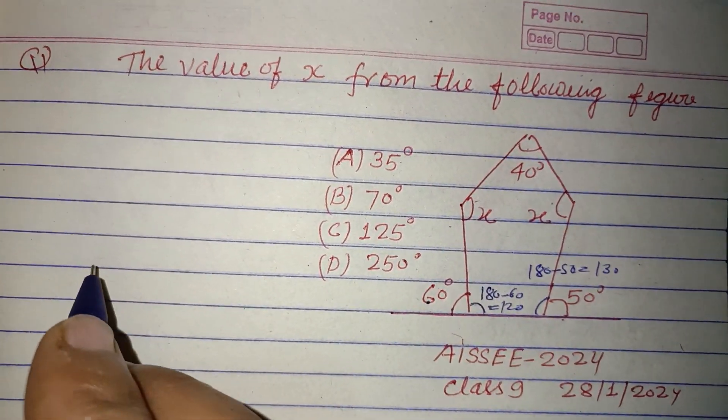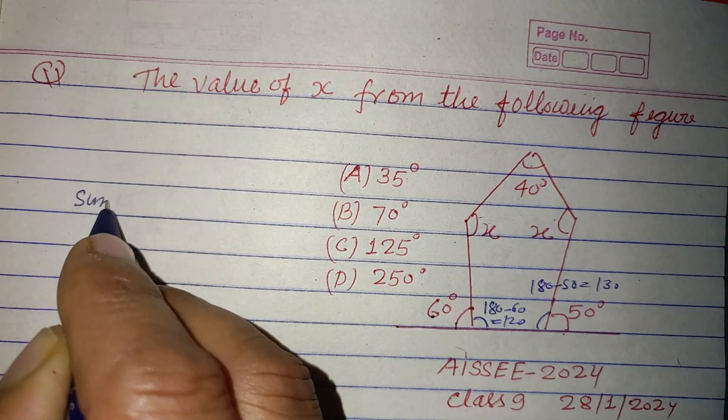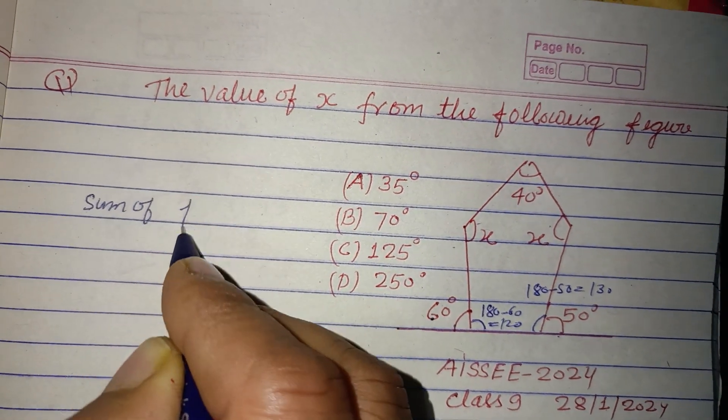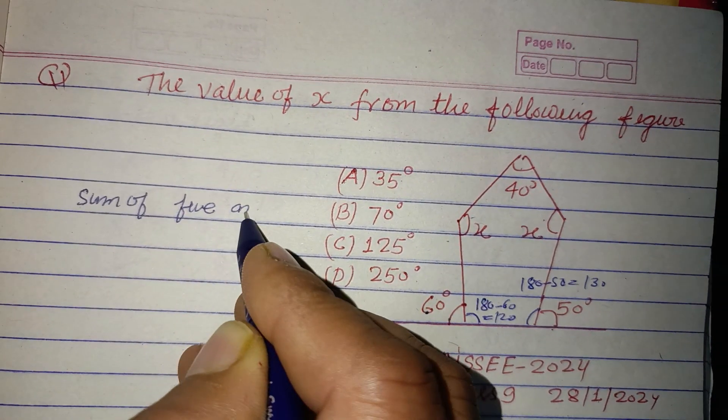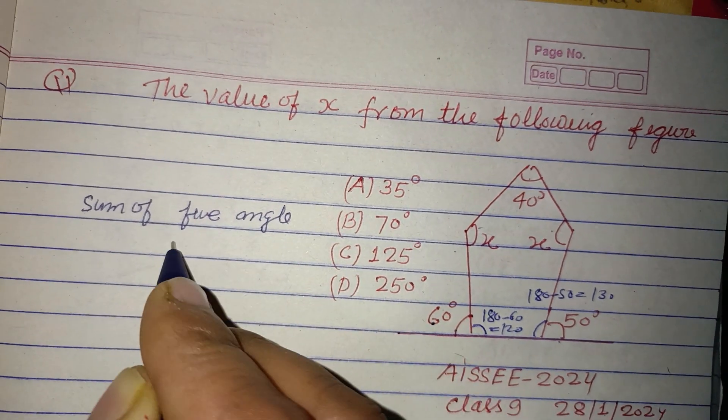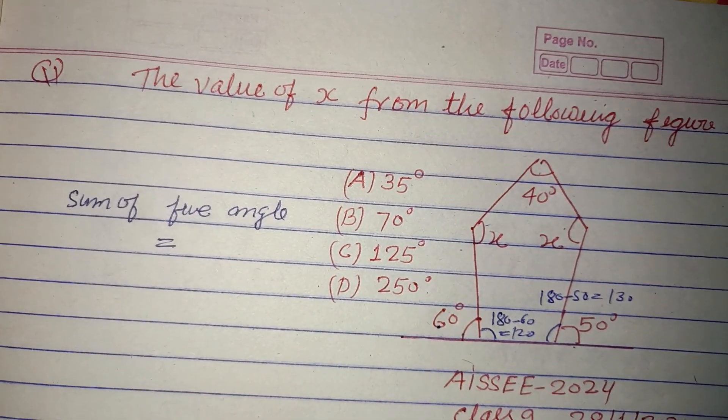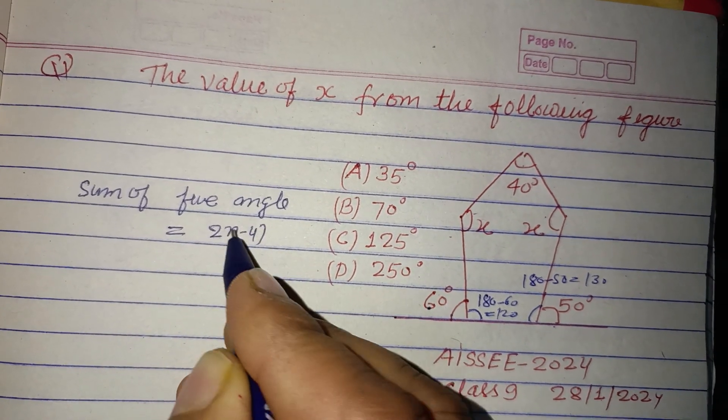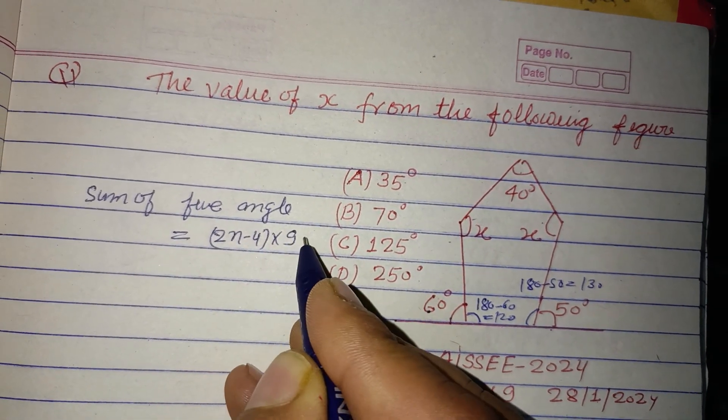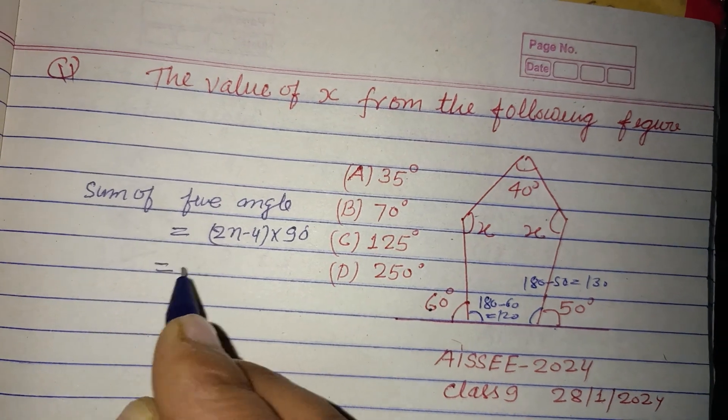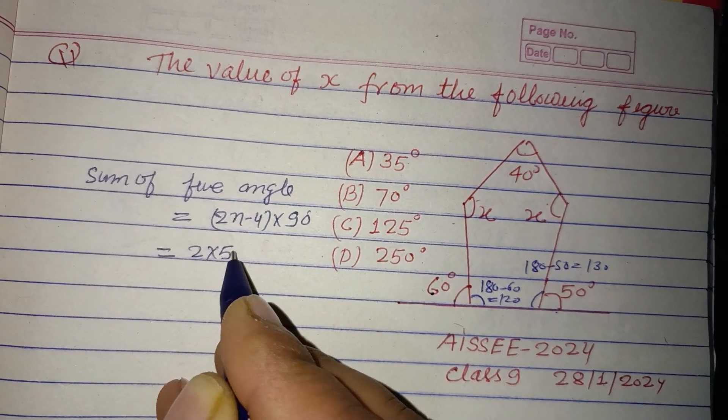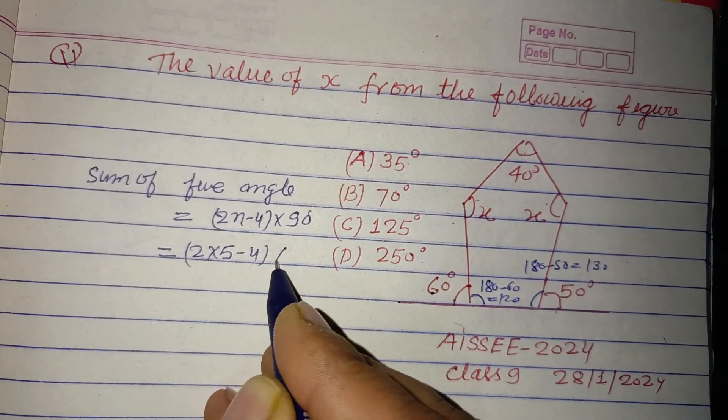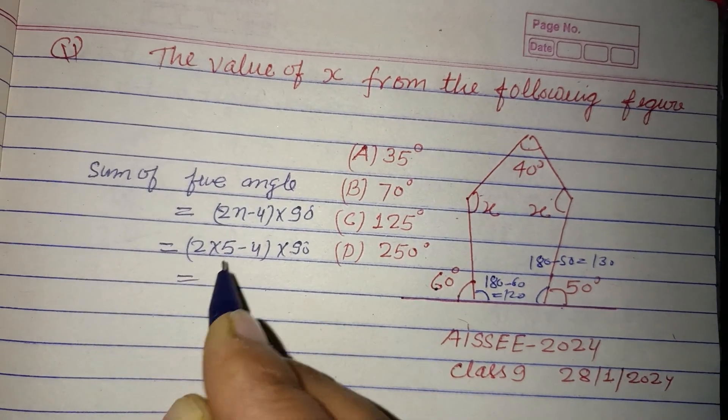So sum of five angles equal to 2n minus 4 into 90. So 2 times 5 minus 4 into 90. 5 times 2 is 10, 10 minus 4 is 6, 6 into 90 is 540.